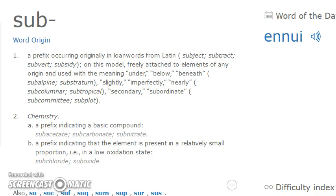Here is 'sub' — this is a prefix occurring originally in loan words from Latin, and it is freely attached to elements of any origin, used with the meaning: under, below, beneath, or slightly, imperfectly, nearly, or secondary, or subordinate. As we'll see when we get into the word, subdermatoglyphic actually uses the first meaning: under, below, beneath.